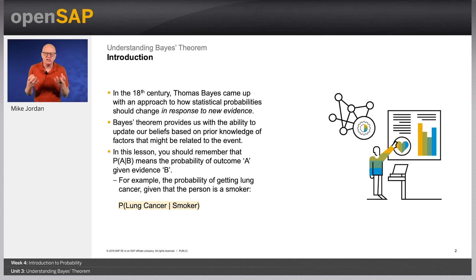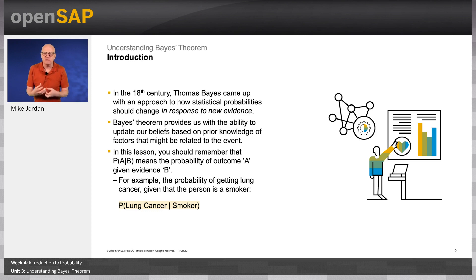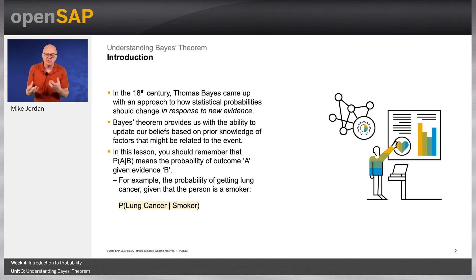Remember first that the pipe symbol means 'given that'. P(A|B) is the probability of an outcome A given the evidence of B. For example, the probability of getting lung cancer given that the person is a smoker would be written as P(lung cancer | smoker).